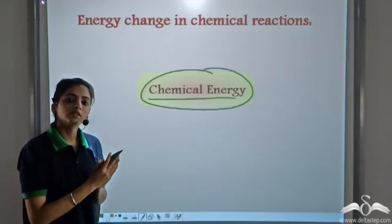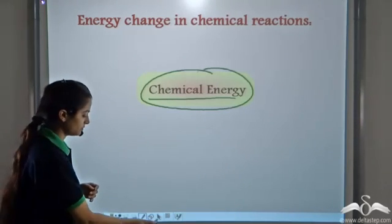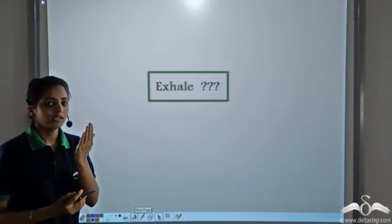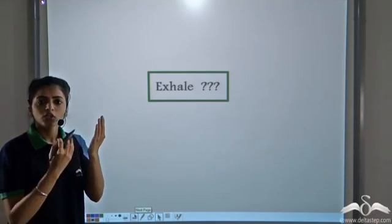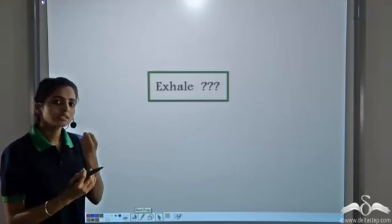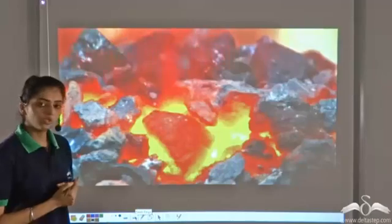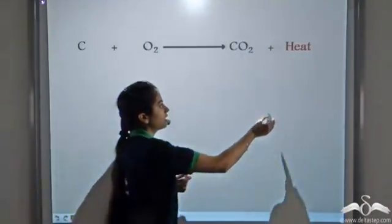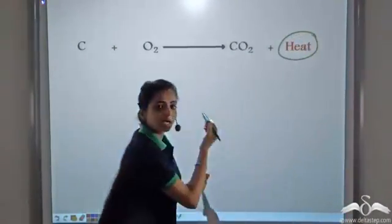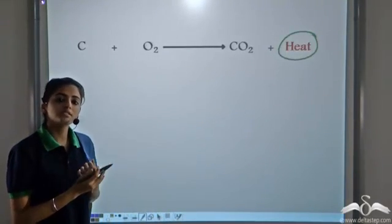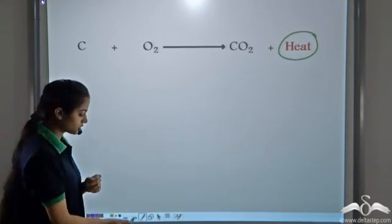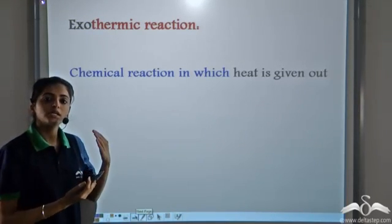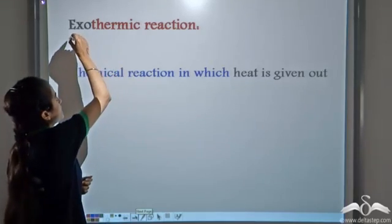Now let's see how energy is associated with a chemical reaction. When you exhale and take your hand near your mouth, you feel some heat being evolved — some heat is released. Similarly, the burning of coal: when we burn coal in the presence of oxygen, heat is released. It forms carbon dioxide and releases a large amount of heat. That is why we use coal as fuel. Such reactions, in which heat is released or given out, are known as exothermic reactions.